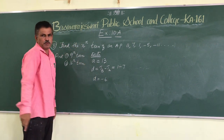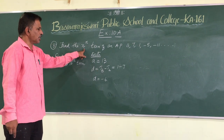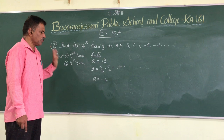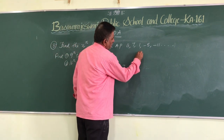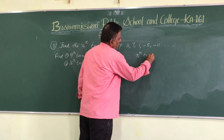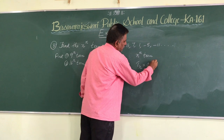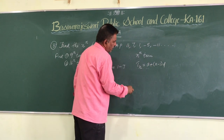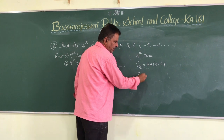We have A and the common difference. He is asking us to find the nth term, and using that nth term formula we have to find out the 9th term as well as the 16th term. The formula for the nth term is: Tn = a + (n - 1) × d.